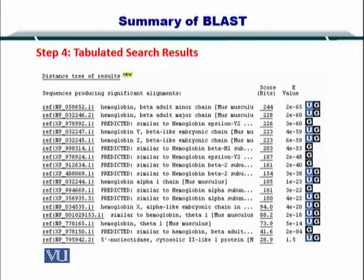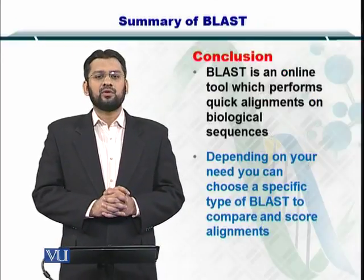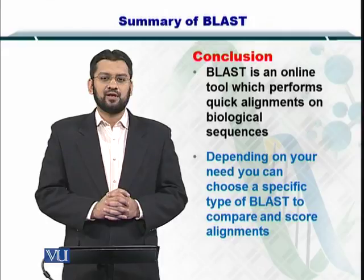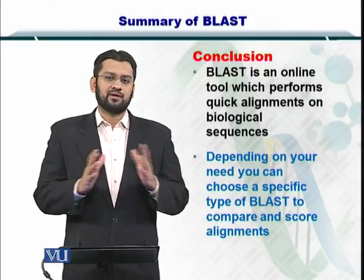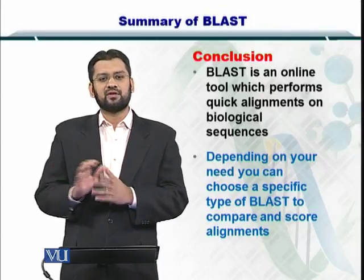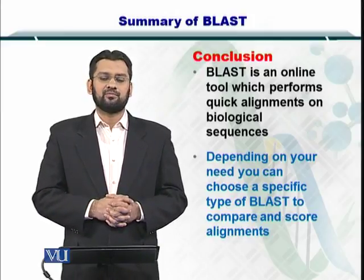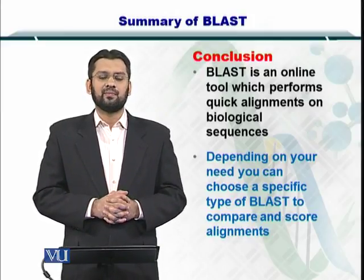Here are your results in flat text format. You can look at the various IDs of proteins — in this case, hemoglobin — that have compared very nicely, along with the scores and E-values. In conclusion, BLAST is an online tool that is freely available and you can compare nucleotide and amino acid sequences from the nucleotide or amino acid sequence databases. Also, depending on your need, you can utilize the type of BLAST that will help you to compare the sequences.